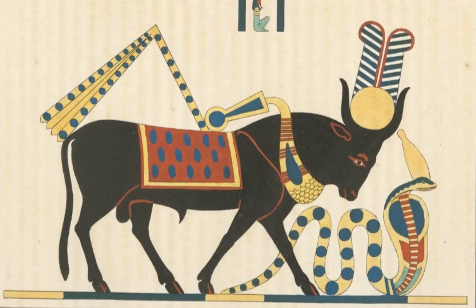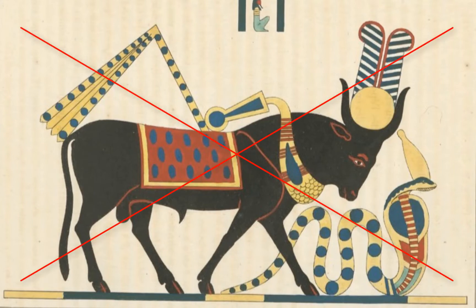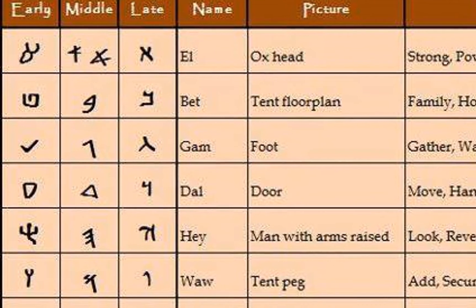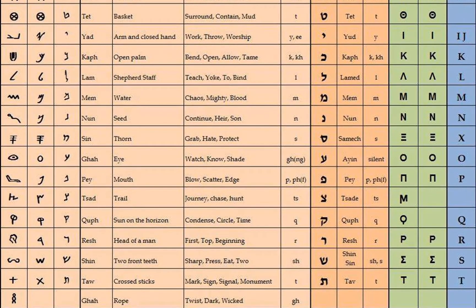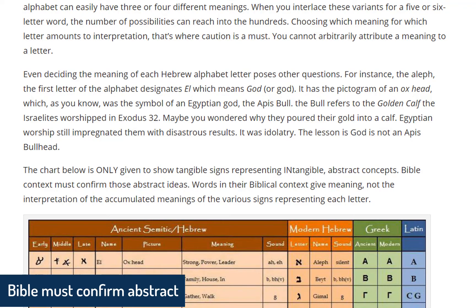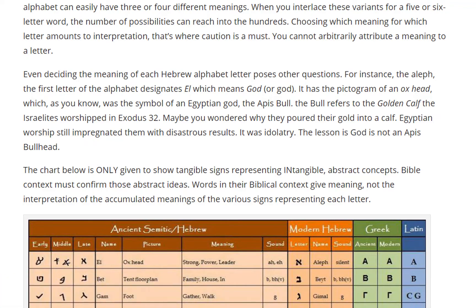The bull refers to the golden calf the Israelites worshipped in Exodus 32. Maybe you wondered why they poured their gold into a calf. Egyptian worship still impregnated them, with disastrous results — it was idolatry. The lesson is: God is not an Apis bull head. The chart below is only given to show tangible signs representing intangible abstract concepts. Bible context must confirm those abstract ideas. Words in their biblical context give meaning, not the interpretation of the accumulated meanings of the various signs representing each letter.